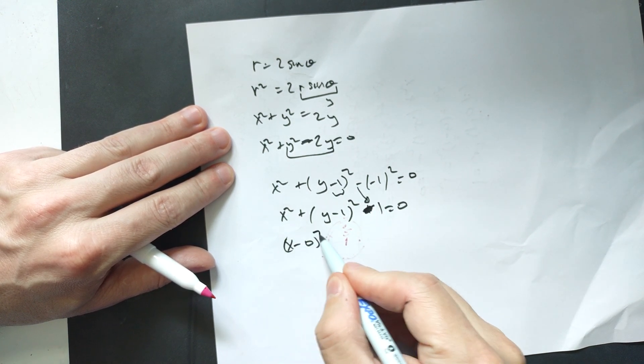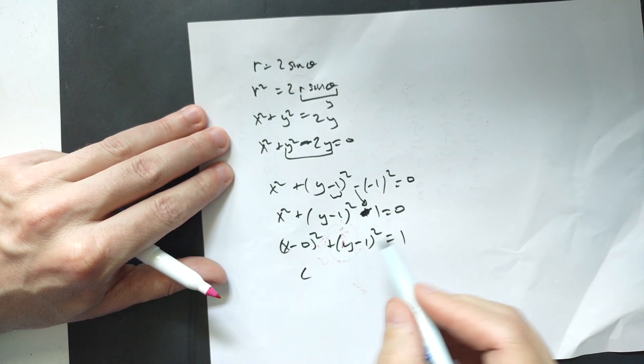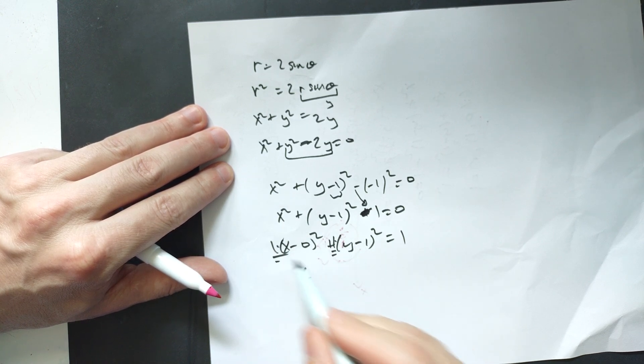Then it's going to be X minus 0 squared plus Y minus 1 squared equals positive 1. So it means we have a circle, because this is 1 and this is 1, these coefficients where they're the same, that means you have a circle.